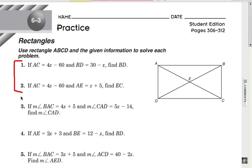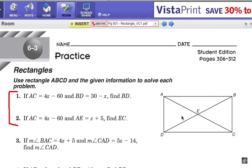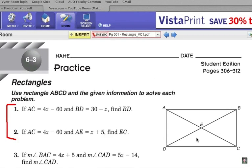Alright, in this video, I just want you to try numbers 1 and 2. Given this rectangle, you want to think about what you know about the sides, the angles, and the diagonals of a rectangle. And you're going to be solving for BD in number 1 and EC in number 2. Good luck.